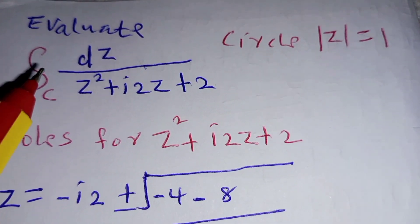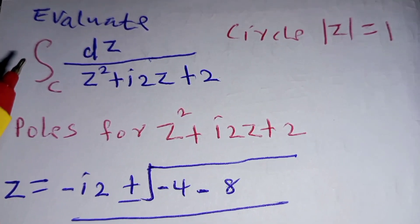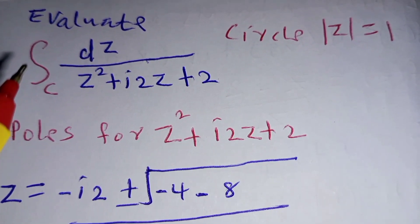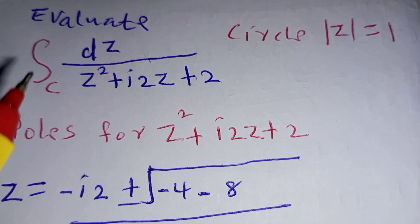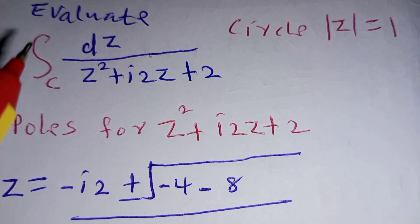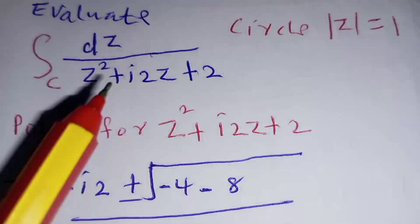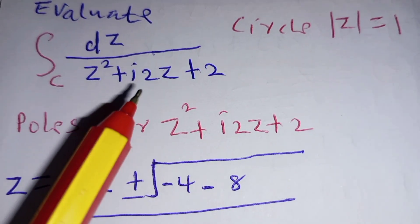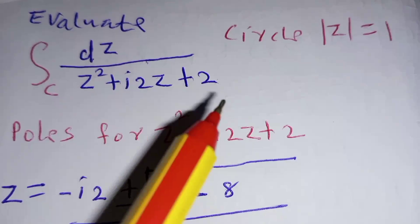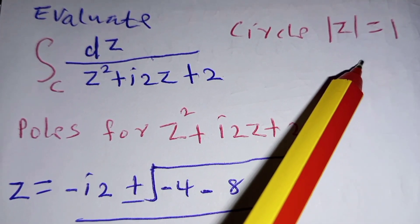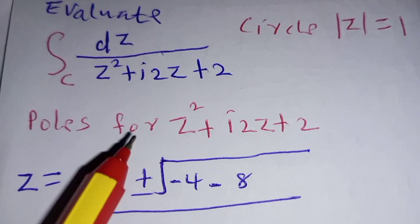Hello my fellow mother mathematician, welcome to the standard complex months. We are looking at the integral of a complex number. We are supposed to evaluate this complex integral along the contour C, and you are given dz over z squared plus i2z plus 2 inside this circle of unit radius, |z| = 1.